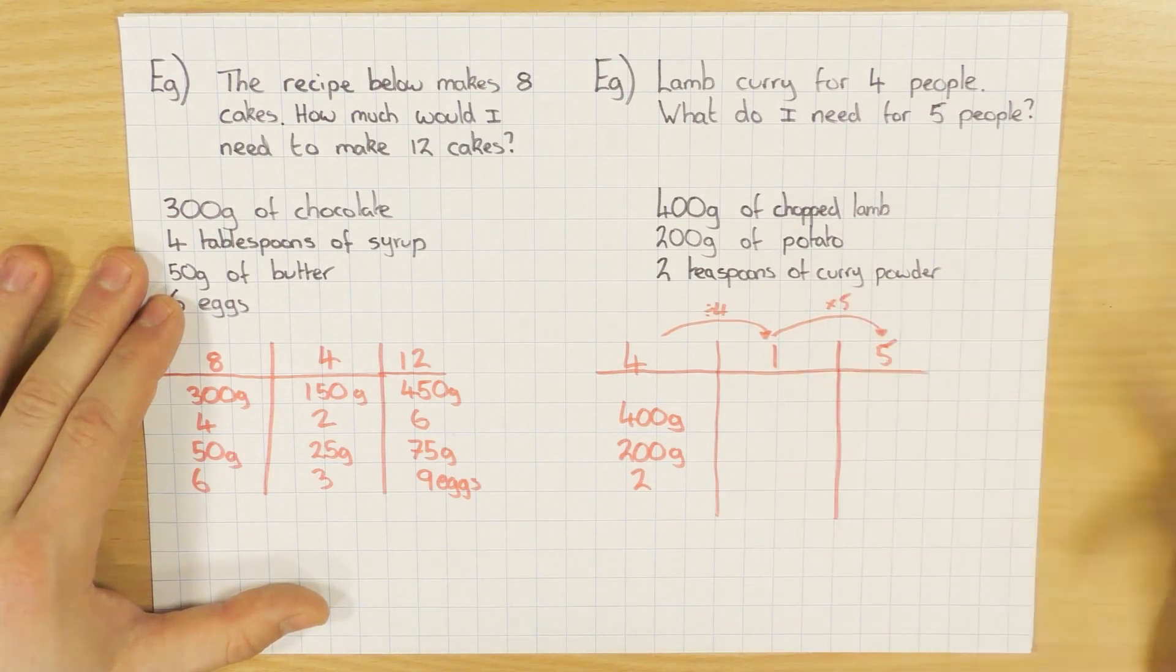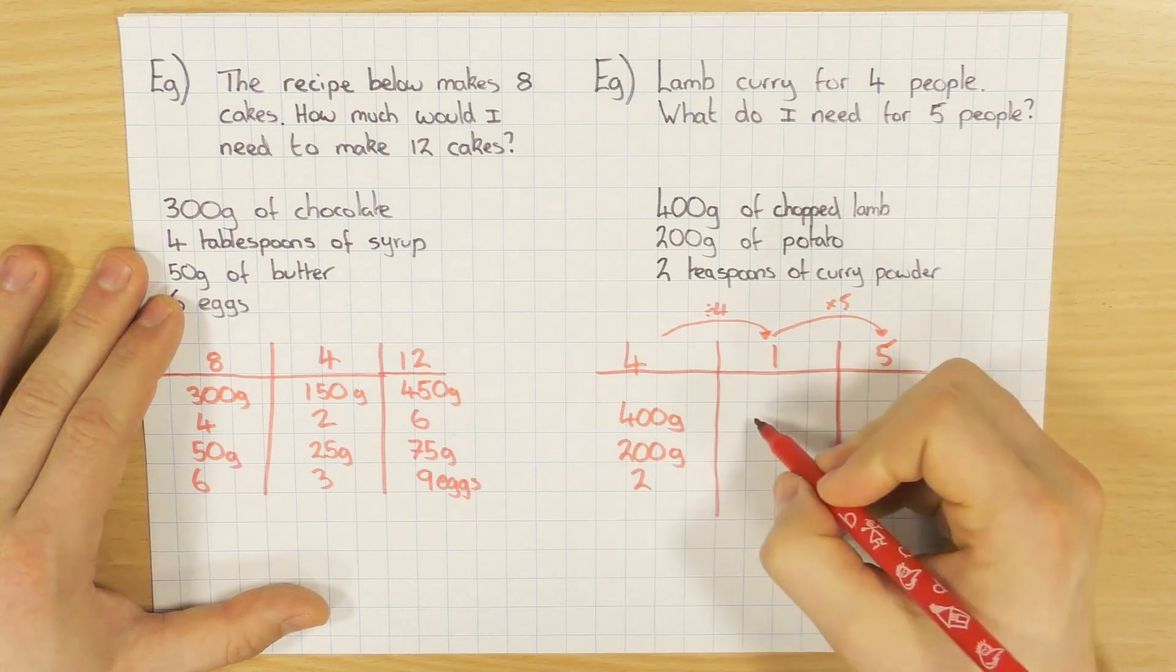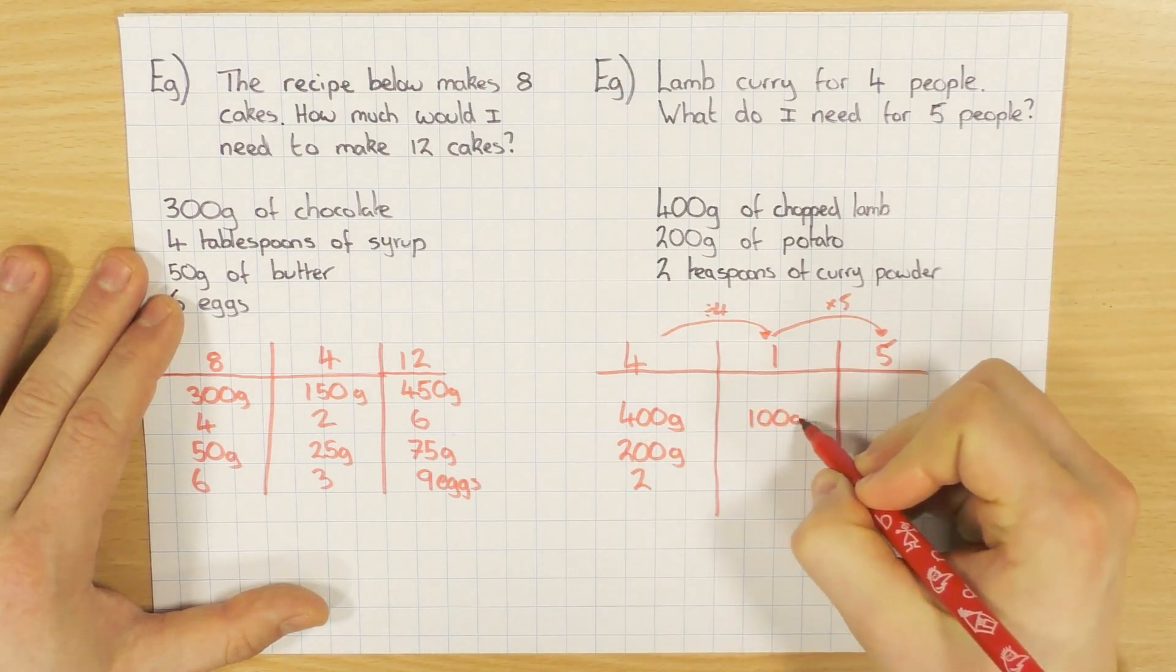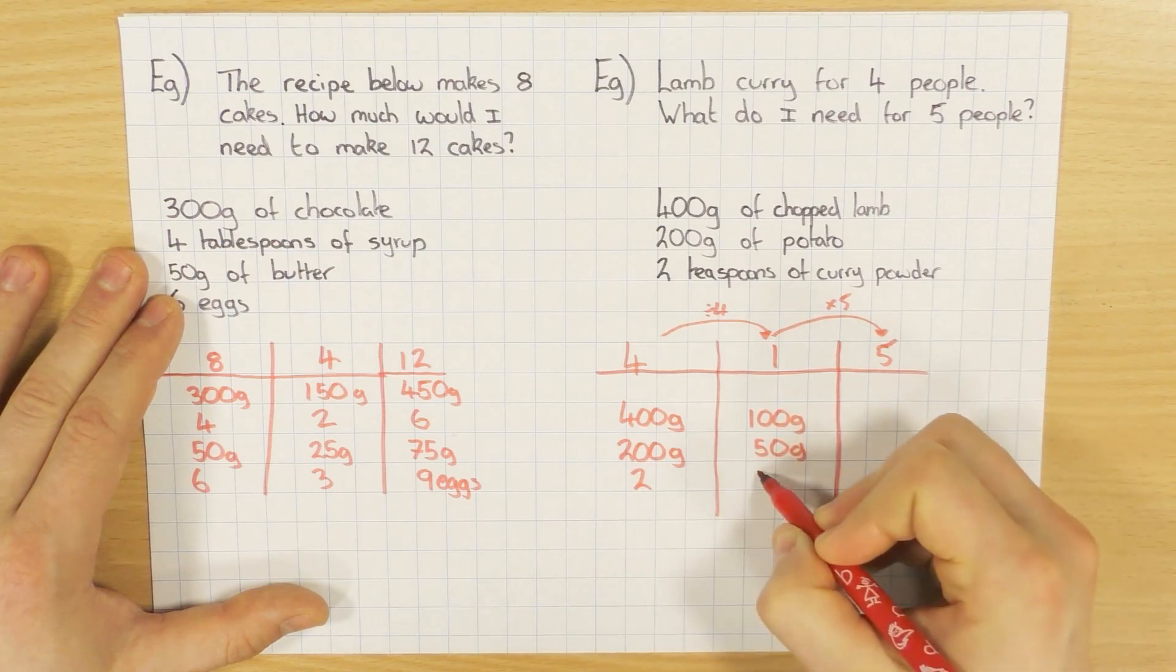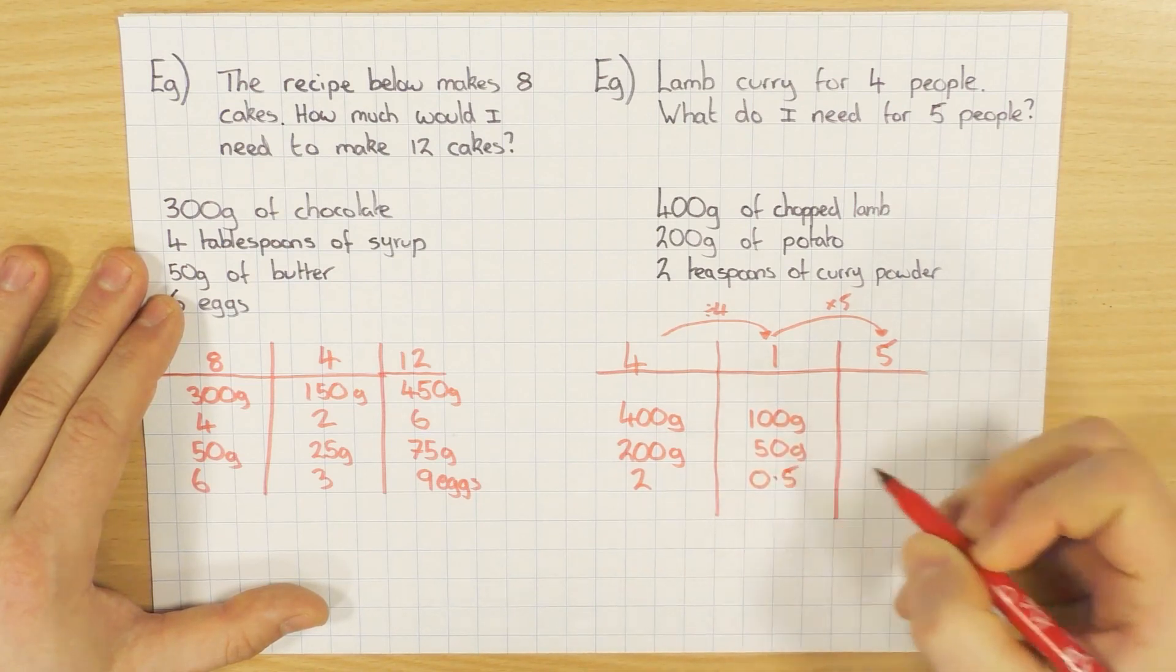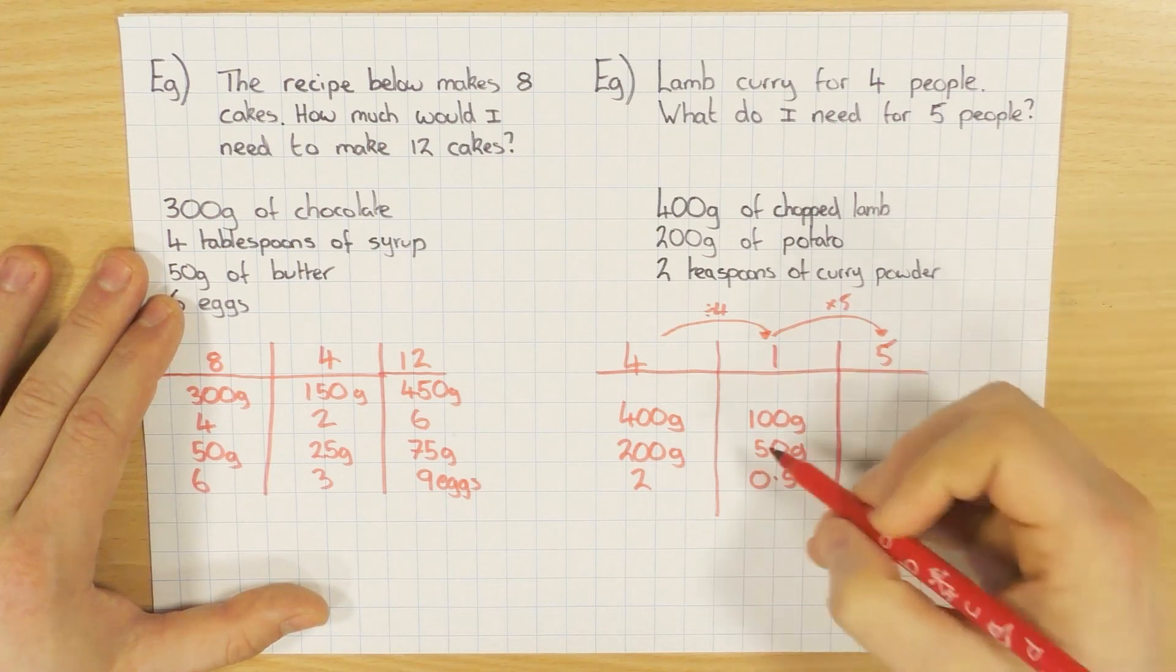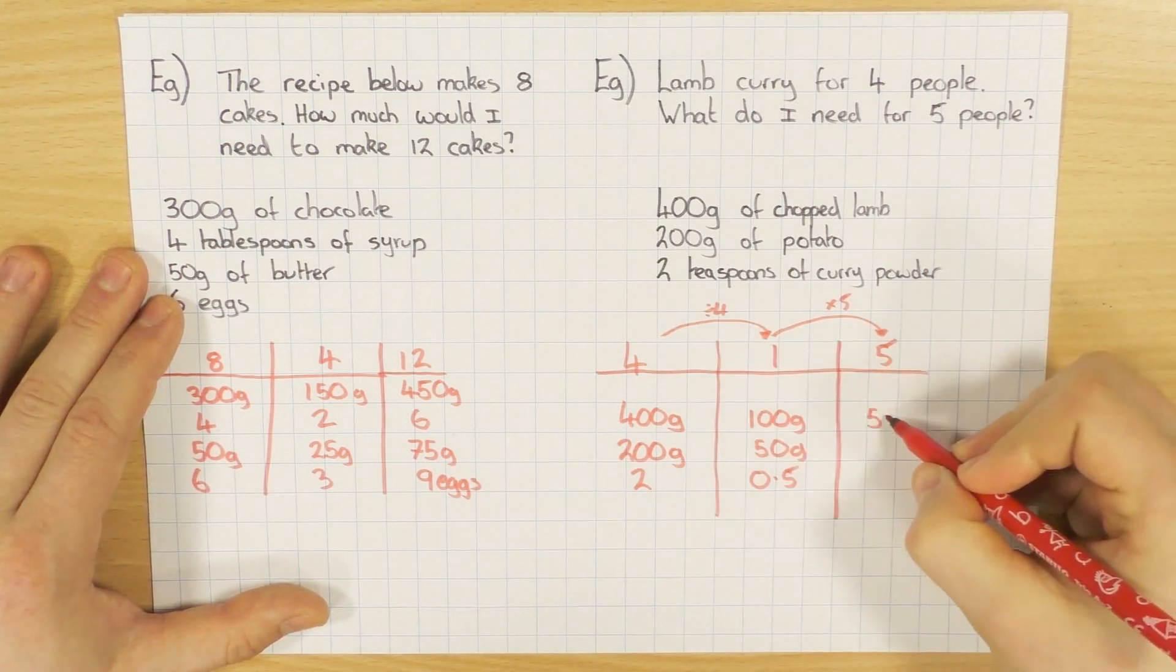So this is just an example of using the unitary method. So divide all these by four, I'm going to have 100 grams, 50 grams, and then 0.5 or half a teaspoon of curry powder, times them all by five to work it out for five people.